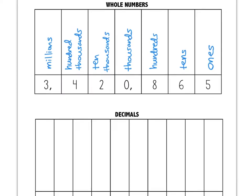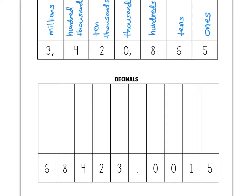With decimals, we have place values to the right of a decimal point. If you look at this decimal, the digits to the left of the decimal point have the same place values as in a whole number. So this three is in the ones place, the two is in the tens place, the four is in the hundreds, the eight is in the thousands, and the six is in the ten thousands.